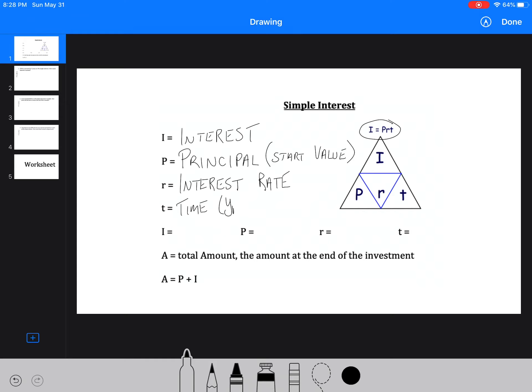So if I equals PRT, that means that we can use this kind of triangle here to figure out all the other ones. You just cover up what you're looking for. Like if we were solving for P, it would be I over RT. If we were solving for R, it's I over PT, and T is I over PR.